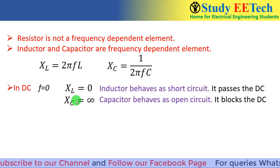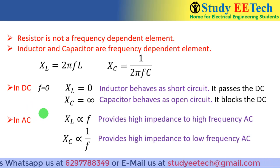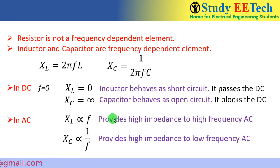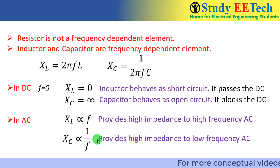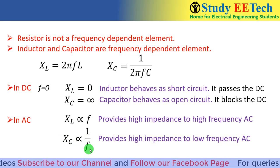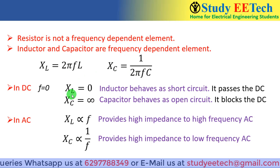Now what happens if we apply an AC signal? In AC the frequency is finite, so XL is directly proportional to f, and XC is inversely proportional to f. For low frequency AC, XL offers low impedance; for high frequency AC, XL offers high impedance. The opposite is true for XC: it offers low impedance at high frequency and high impedance at low frequency. Keep these properties in mind as we classify the filter circuits.